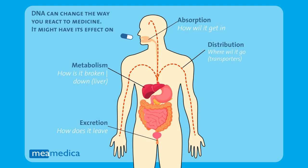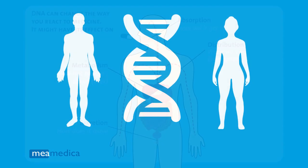The proteins in our body that are formed from our DNA are responsible for the absorption, distribution, metabolism, and excretion of drugs. As we all have our own set of genes, we are all genetically different, and therefore our bodies also differ in how we react to medicines.